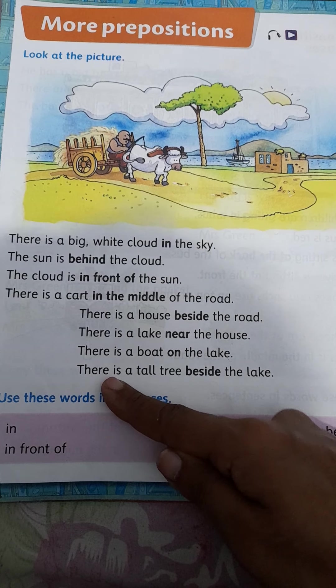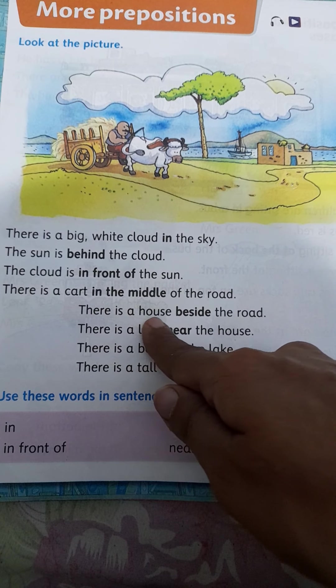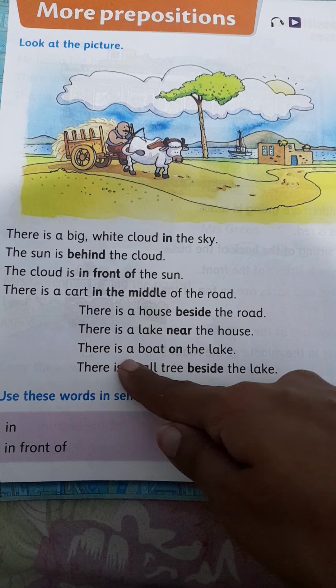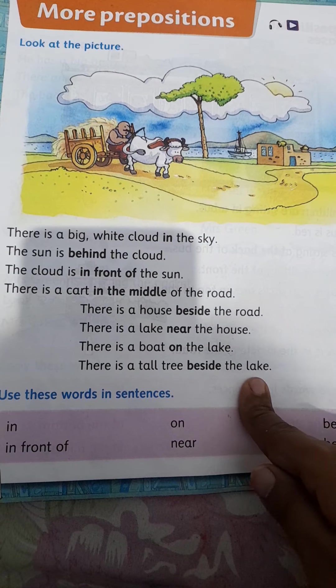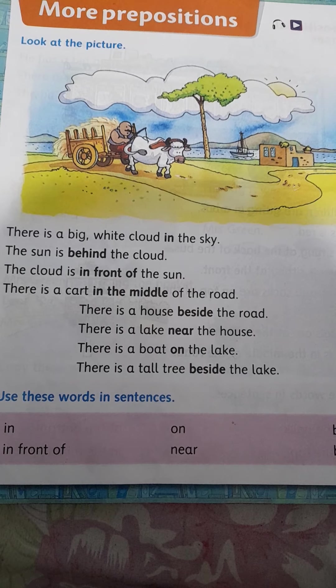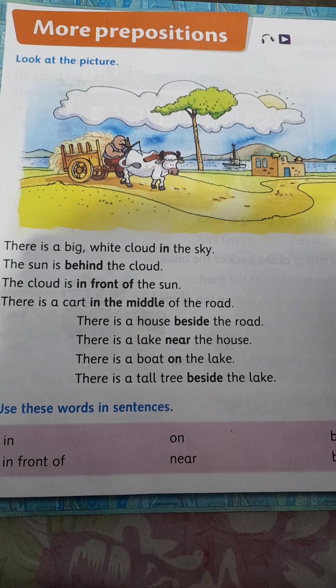Let's revise this lesson once again. There is a big white cloud in the sky. The sun is behind the cloud. The cloud is in front of the sun. There is a cart in the middle of the road. There is a house beside the road. There is a lake near the house. There is a boat on the lake. There is a tall tree beside the lake. You have to read this lesson again and again so that you may be able to read any type of English lines and any type of English book.